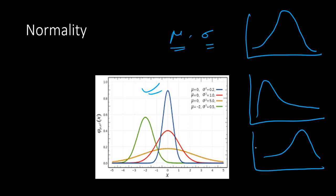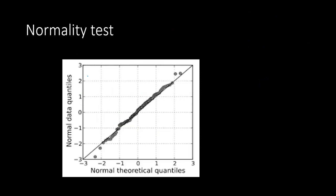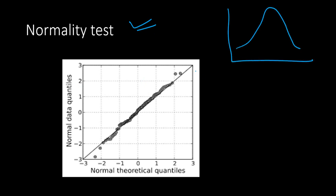There are many other areas where the normality assumption is also required. For instance, ANOVA also assumes normality, and a number of mean comparison tests also assume normality of your data. So what do you do when there is a deviation? Firstly, you need to test whether your data is normally distributed or not. One way is to visualize it, but there are better statistical ways to do it.